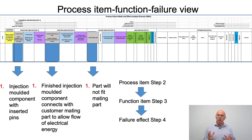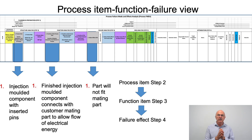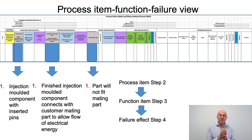With regard to how we format an FMEA, this could be done in Excel spreadsheets, or many people use specialist software to format an FMEA. Irrespective of what format we're using, as we've gone through steps two, three and four, remember that some of the boxes are all numbered one — and if we look at the process item, function, and failure view, these should all line up.